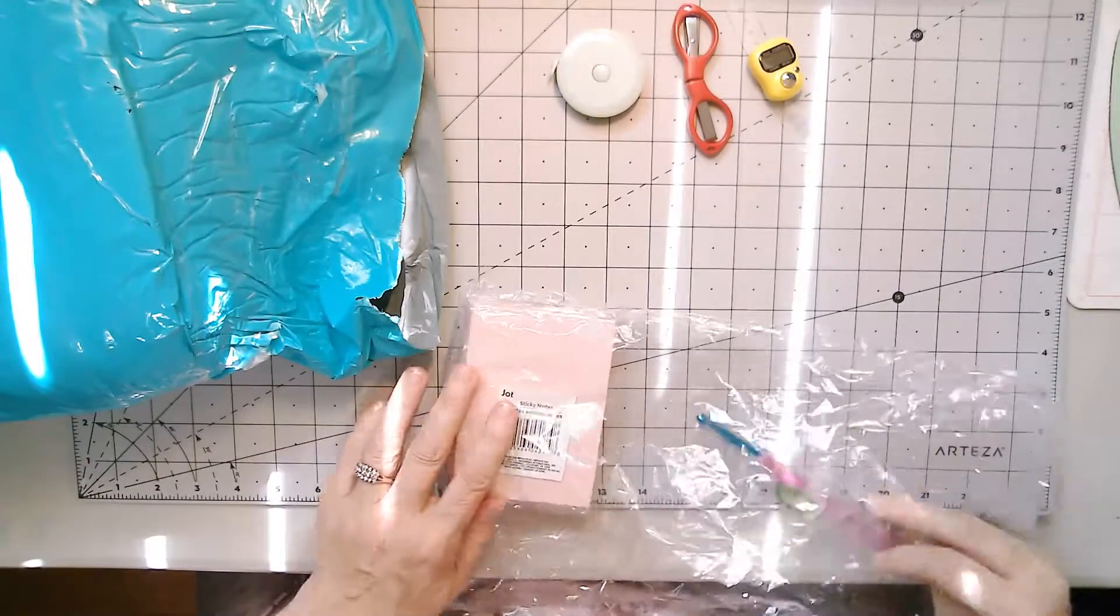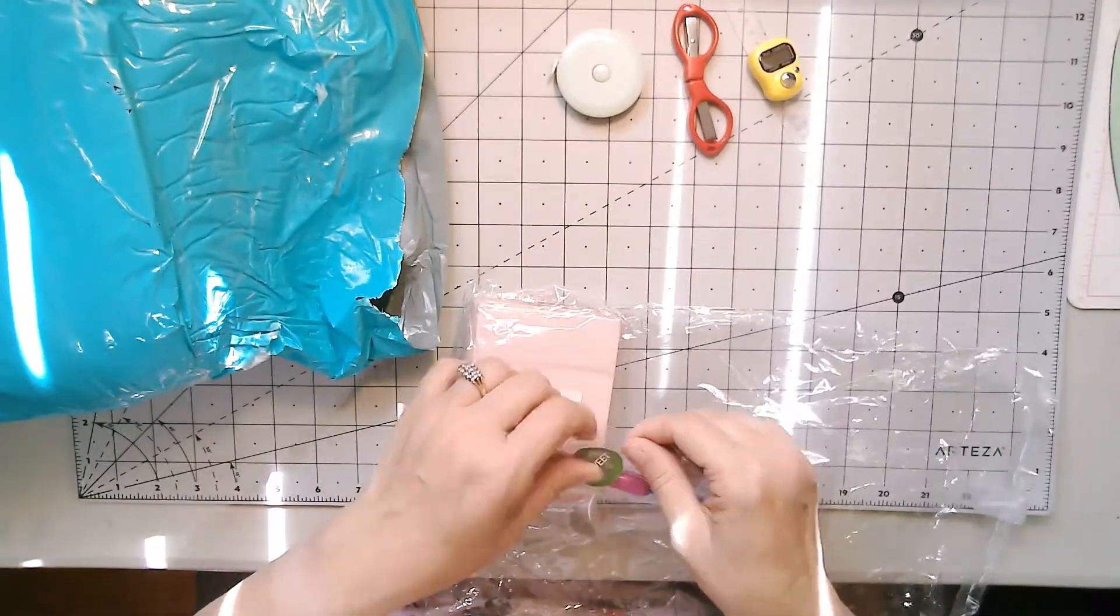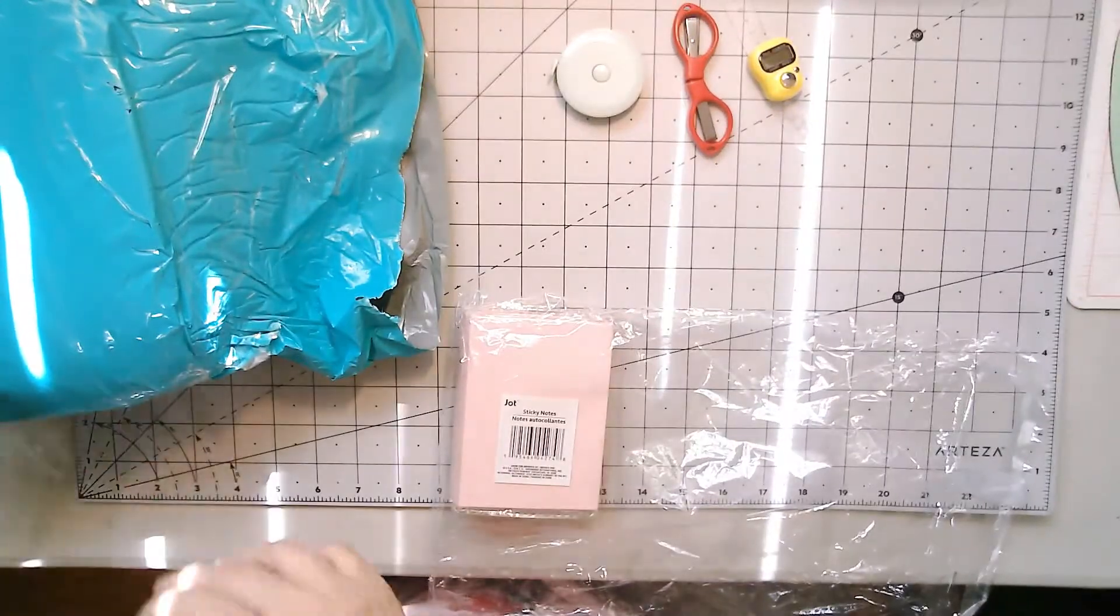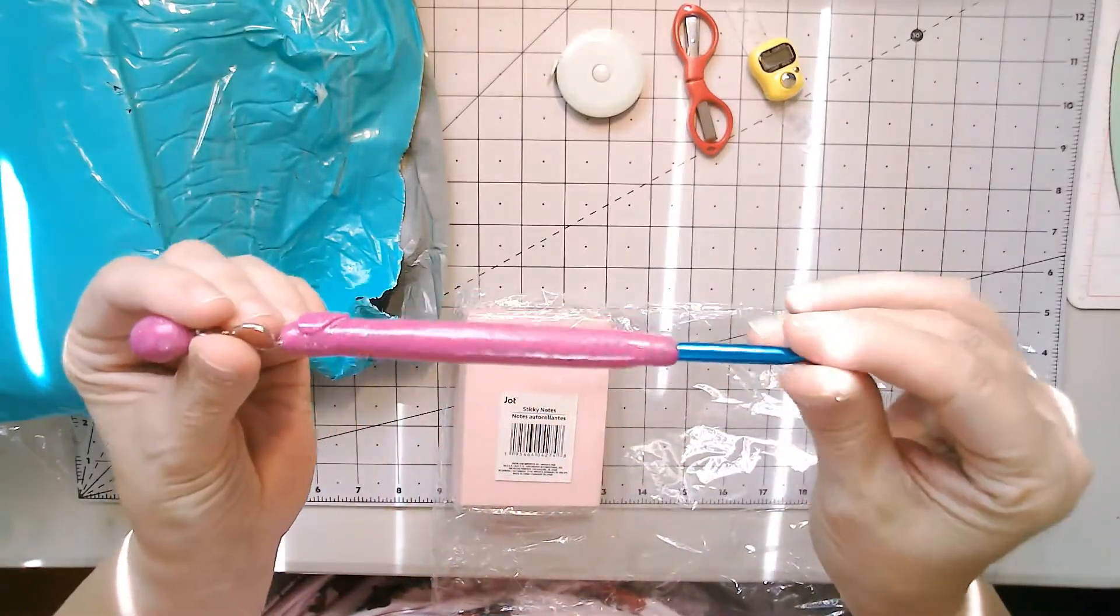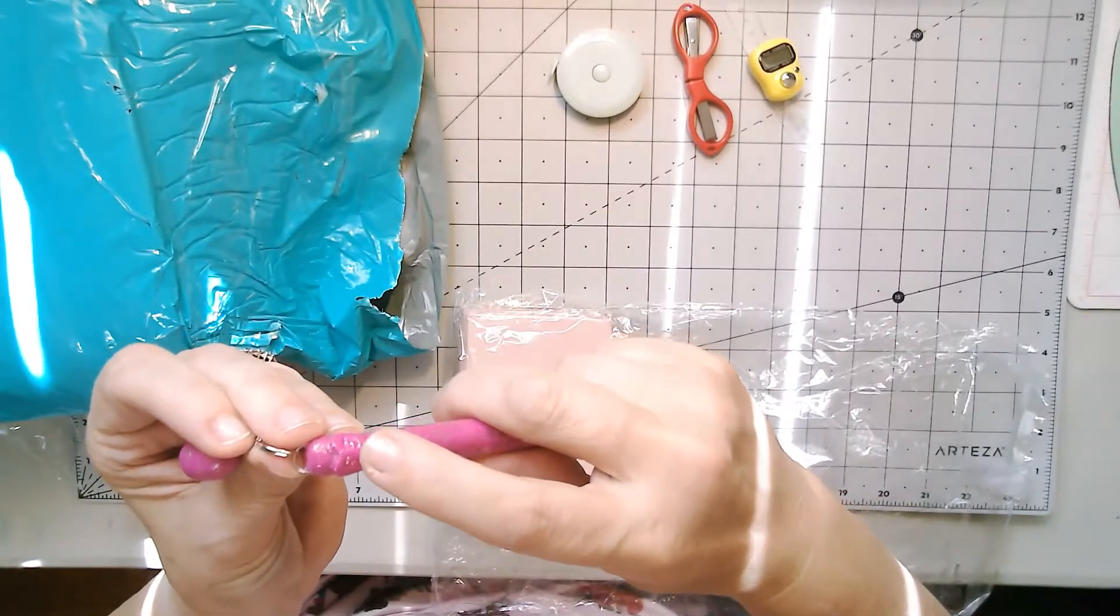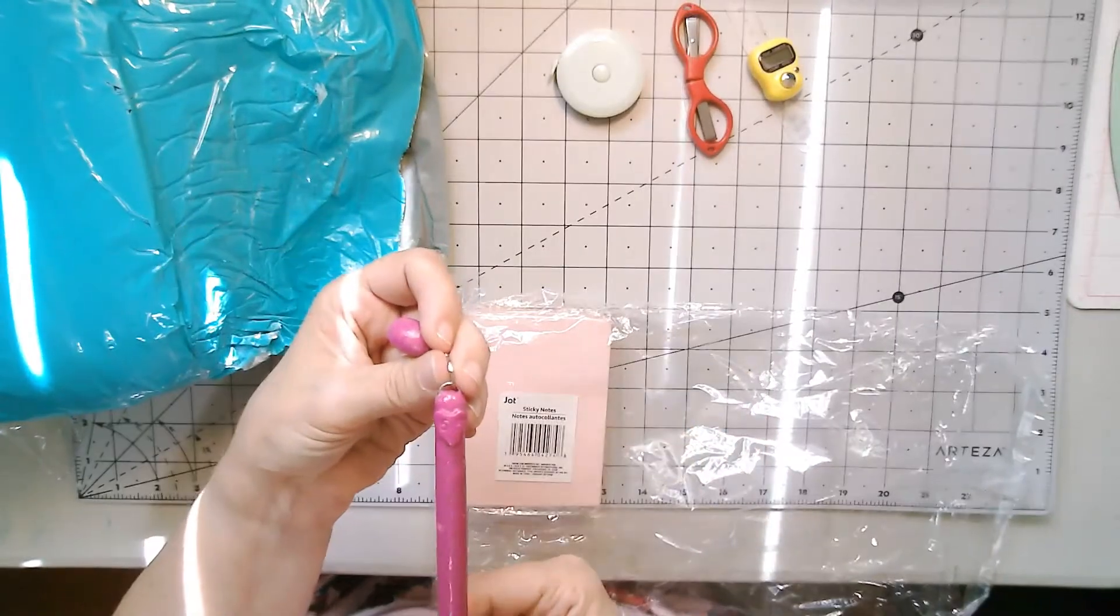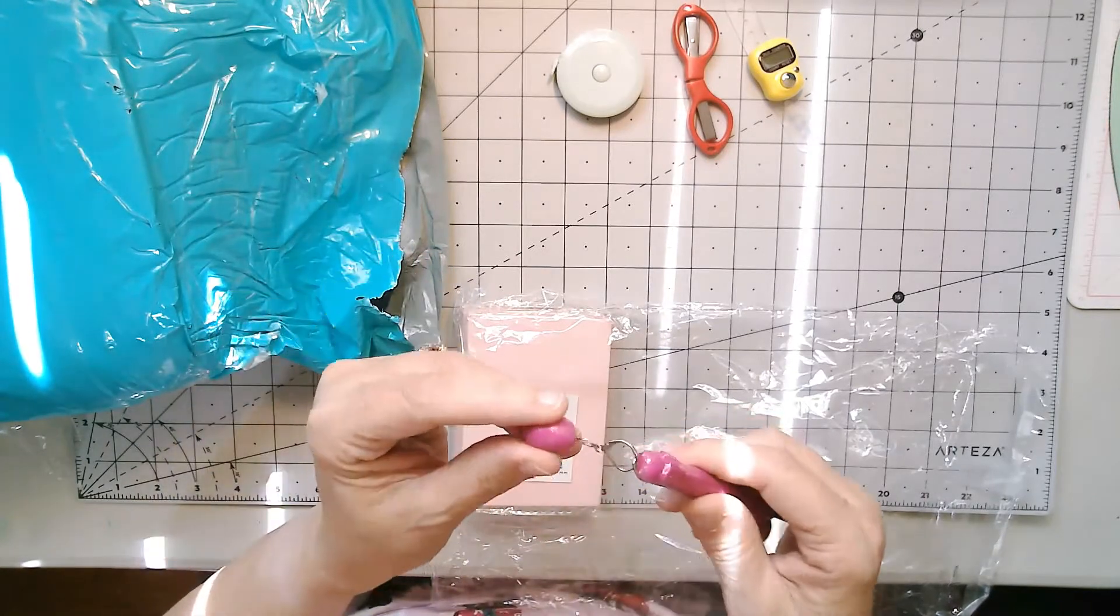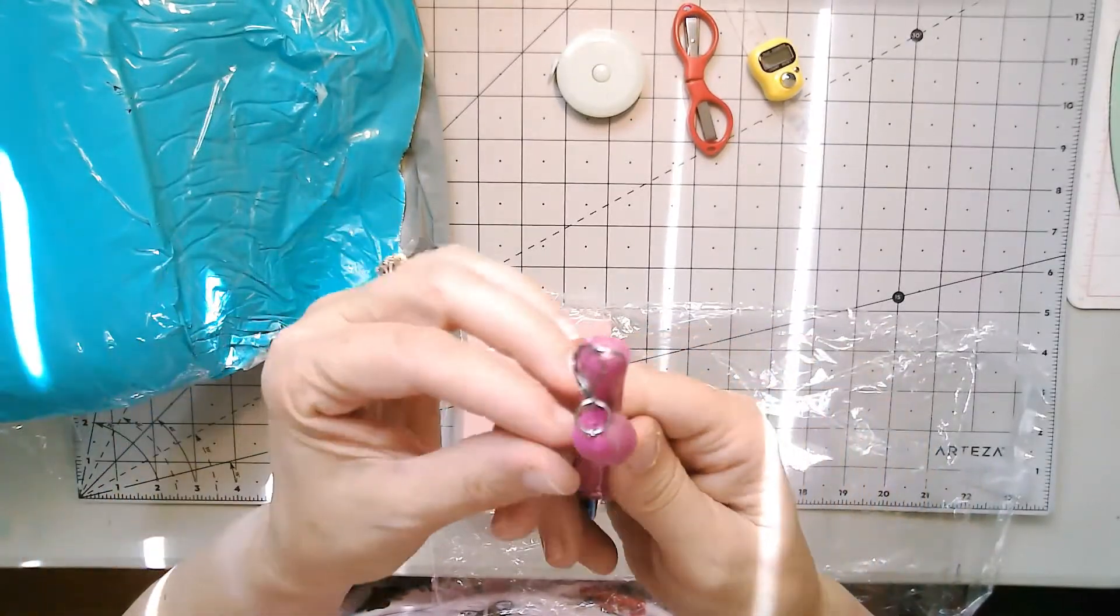And then she also included one of her crochet hooks that she makes. So there's that. And she always stamps the size of the hook. This one is a 5.5. And then she always puts a coordinating stitch marker.